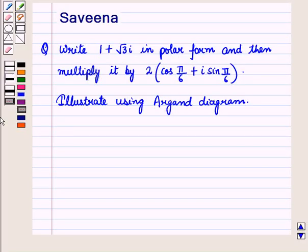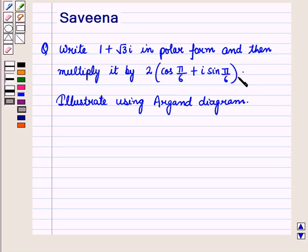Hello and welcome to the session. In this session we will discuss a question which says: write 1 plus root 3 iota in polar form and then multiply it by 2 into cos of pi by 6 plus iota sin pi by 6, the whole. Illustrate using an Argand diagram.